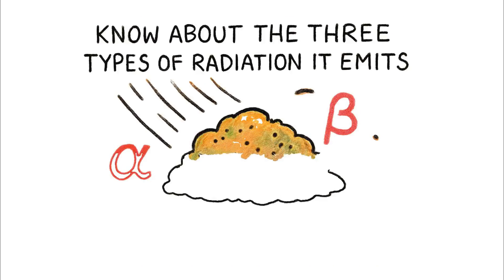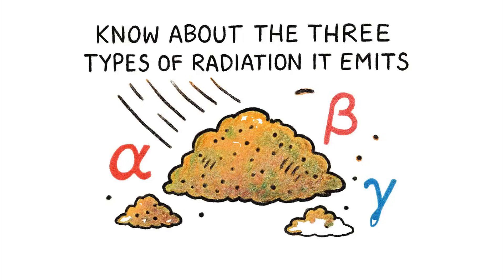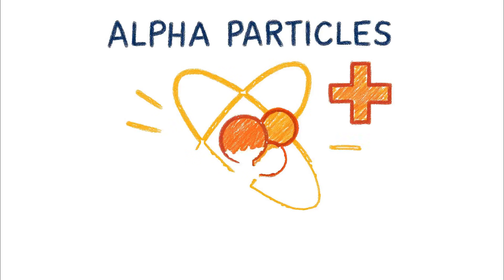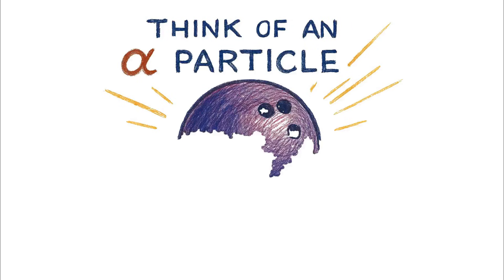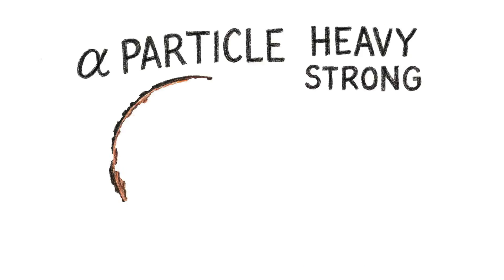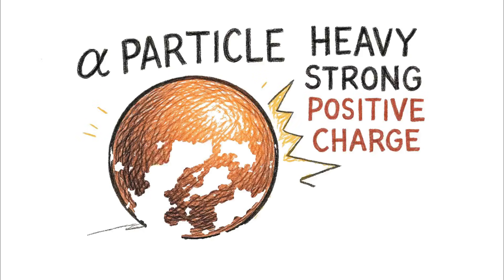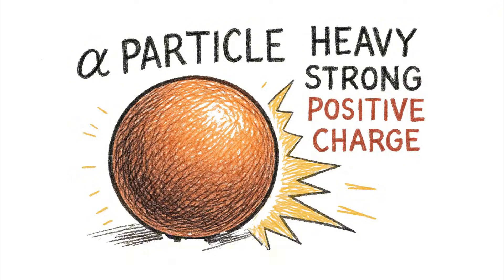To understand the threat this dust poses, you have to know about the three types of radiation it emits. Let's start with the first, alpha particles. Think of an alpha particle as a bowling ball. It's incredibly heavy and massive on a subatomic scale, and it carries a strong positive charge.